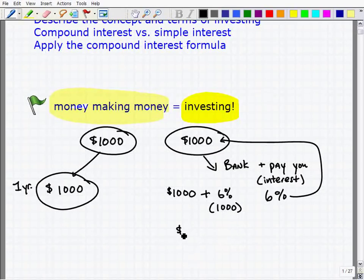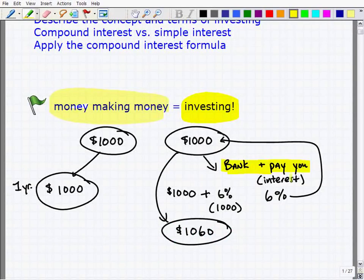So at the end of one year, you have $1,060. You can see here that it's a much better deal to go to a bank and invest.